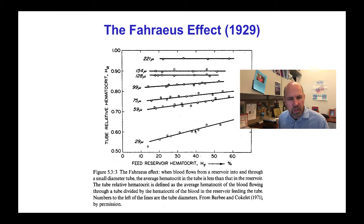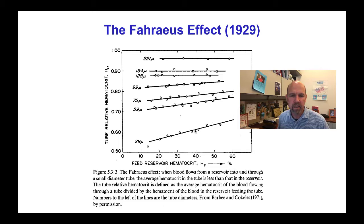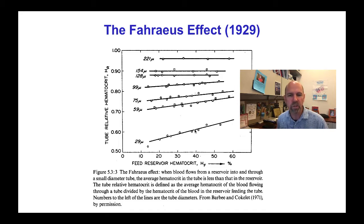It turns out that this observation explains the Fåhræus-Lindqvist effect, because the viscosity of blood depends on the hematocrit of whole blood. If the hematocrit of blood flowing in a small tube is less than the hematocrit of blood going into the tube, then the apparent viscosity would be lower. So the Fåhræus effect explains the Fåhræus-Lindqvist effect.